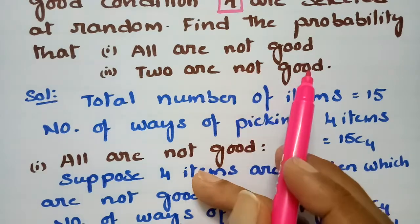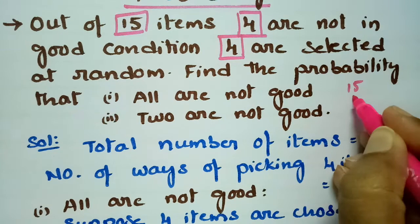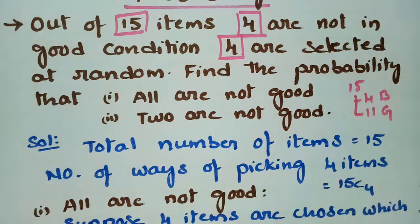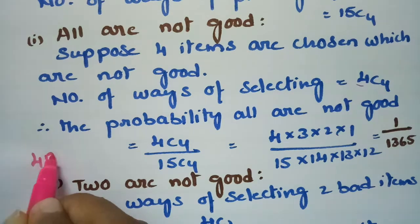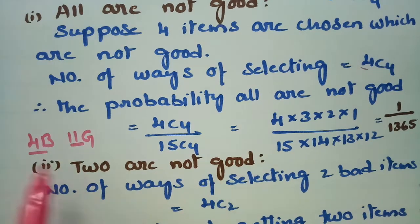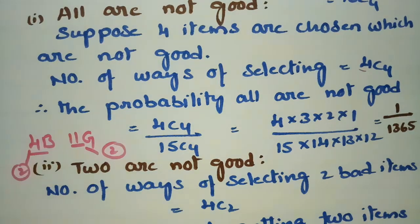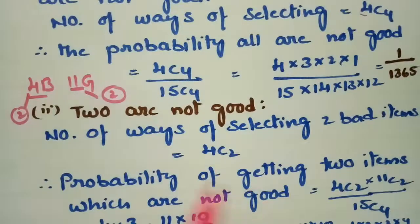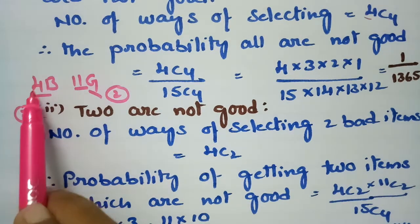For the second question — 2 are not good — out of 15 items, 4 are bad and 11 are good. We need to select exactly 2 bad items and 2 good items (since 4 total are selected). The number of ways to select 2 bad items from 4 is 4C2.